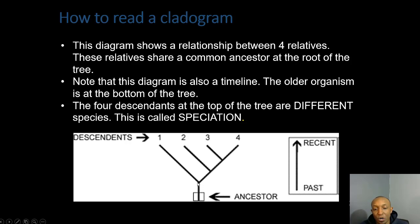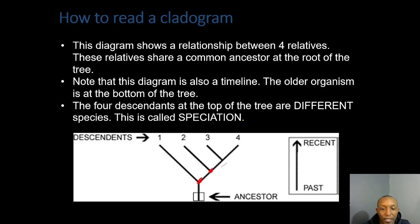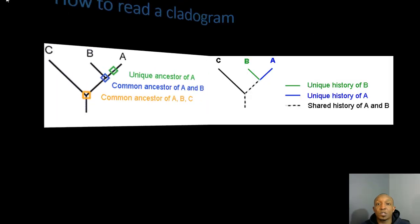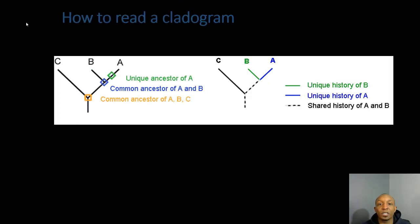Speciation occurs at different points along the cladogram. At this point right here it branches off and descendant one goes here; further up, descendant two branches off; then descendant three branches off; and finally here's descendant four. This branching process is called speciation.